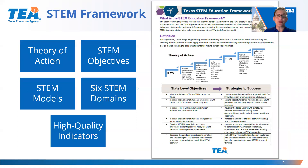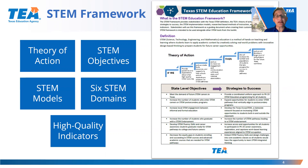Before looking at the toolkit, it is important to look at the STEM framework. The framework was developed in 2019 to guide districts as they begin to explore STEM education locally. The framework consists of five main components: the theory of action, STEM objectives, STEM model progression, the six domains of STEM, and the STEM high-quality indicators.